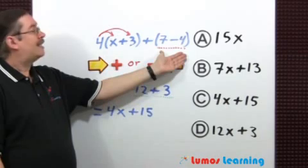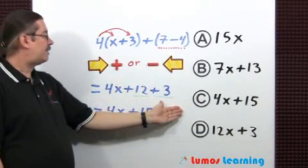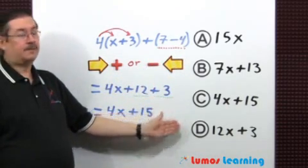Next, let's just subtract 7 minus 4. You get 3. Now, combine like terms.